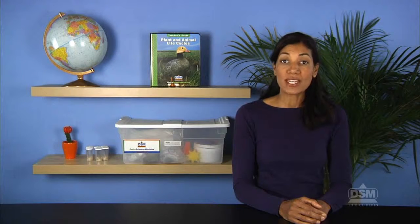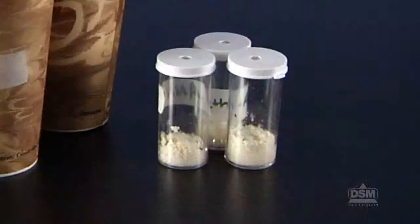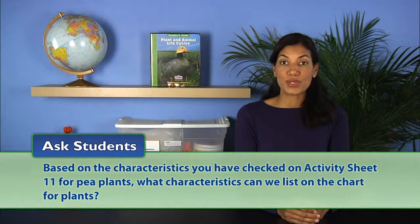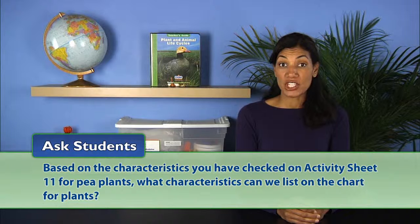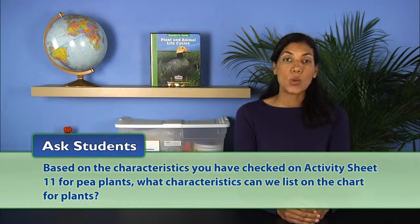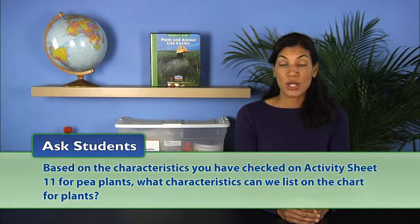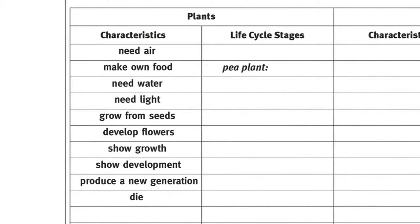Students should identify the pea plant as a plant and the fruit fly as an animal. Then ask, based on the characteristics you have checked on Activity Sheet 11 for pea plants, what characteristics can we list on the chart for plants? Record all correct responses on the chart.